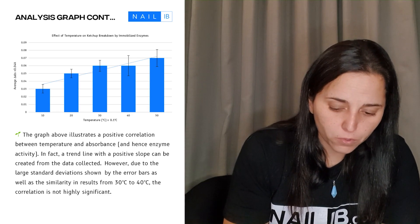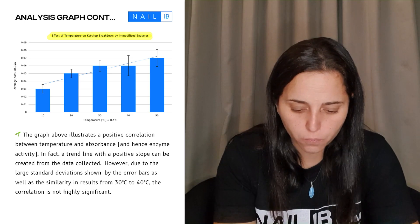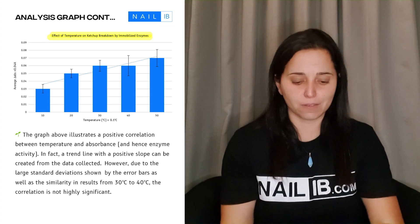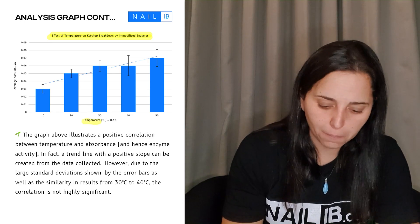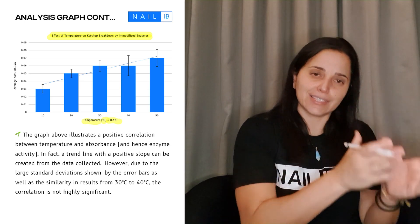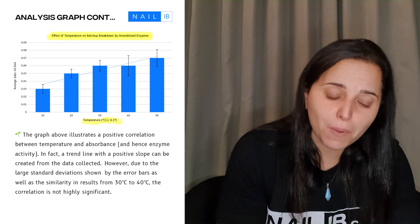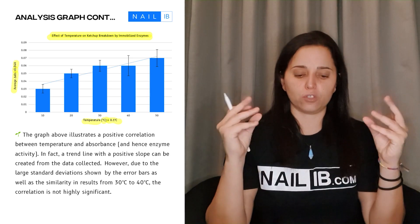The first and most important thing here is there is a title. It says effect of temperature on catch-up breakdown by... So there's a full title telling you the independent and the dependent. Now let's look at the X. The X, you have the title, which is temperature. You have the unit and the uncertainty. The name, the unit, the uncertainty. And then on the Y, which is a dependent variable, you have the name, the unit, and the uncertainty. If you keep those, you don't lose points.